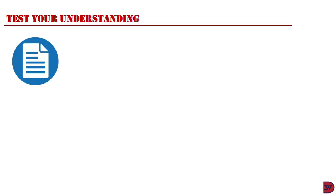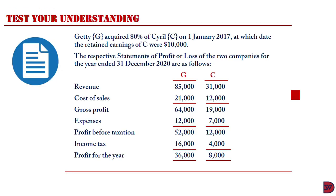Let's test our understanding again. Getty, represented by Gene, acquired 80% of Cero, represented by C, on 1 January 2017, at which date the retained earnings of C were $10,000. The respective statements of profit or loss of the two companies for the year ended 31 December 2020 are as follows.